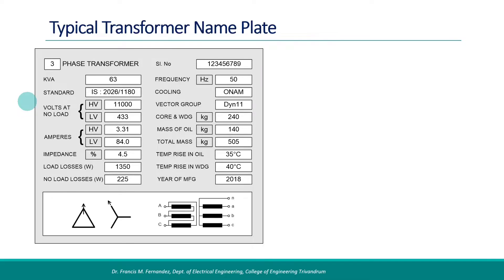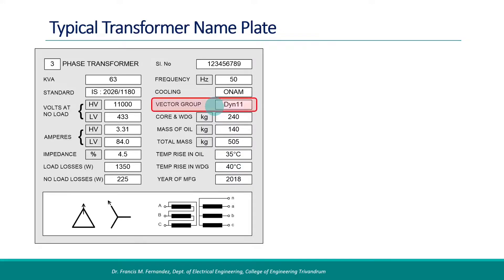The details of the transformer are printed on the nameplate, that include the kVA rating, the voltage on the primary and secondary sides, the currents, the percentage impedance of the transformer, the frequency of operation, type of cooling, the weight of the transformer parts, and the possible temperature rise. In addition to all these things, the vector group is also specified and here it is given as dyn11.